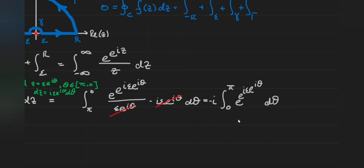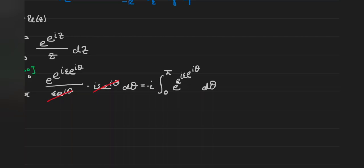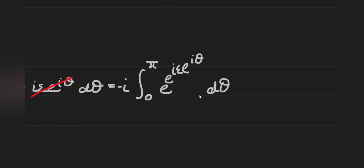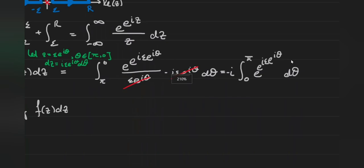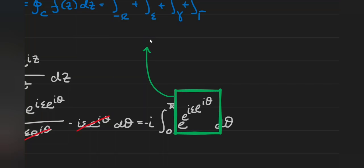Now, how do we evaluate this integral with this insane power tower? We want to take the limit as epsilon approaches zero and bring that limit inside the integral using the dominated convergence theorem. To do that properly, we need to show this function is bounded and the bounds are integrable on this domain. So let's investigate the expression. We apply Euler's formula to the top exponential, giving us e to the e to the i epsilon cosine of theta times e to the negative epsilon sine of theta. We need to show this whole expression is bounded.